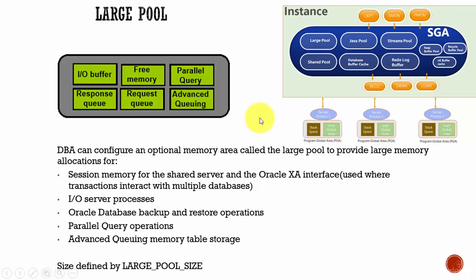In this session, let's learn about large pool. As a DBA, sometimes we are required to configure an optional memory area called large pool. This is not mandatory — it is an optional memory area used for operations where a lot of memory is required. If you don't allocate large pool, then these operations will use the shared pool, resulting in lack of memory for other important operations.